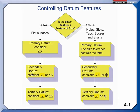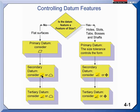Your secondary and even tertiary datum features often will need an orientation control — I'm saying angularity, but you could use perpendicularity or parallelism if they're appropriate. And occasionally, you'll have to locate these features, so for location you'll have to go to profile of a surface.